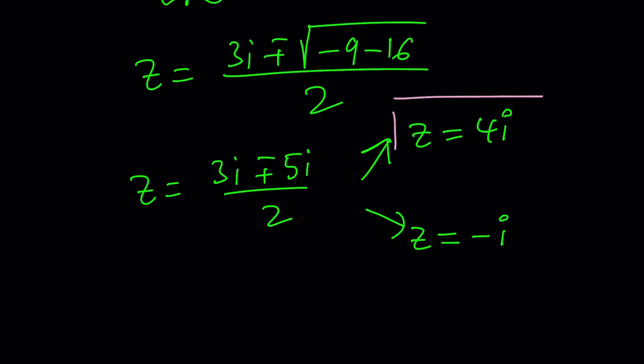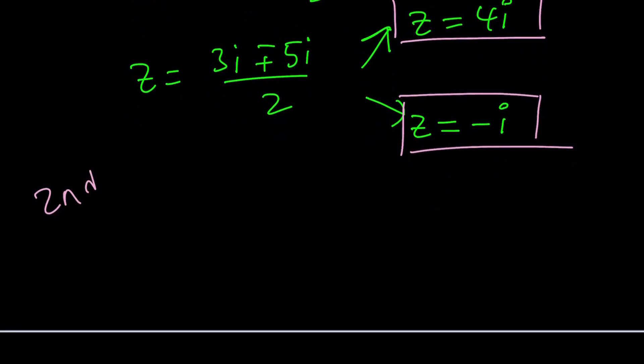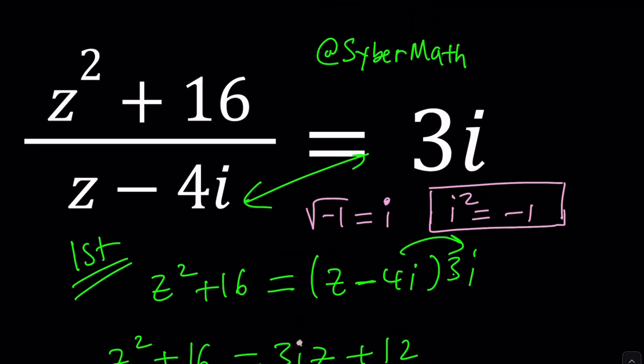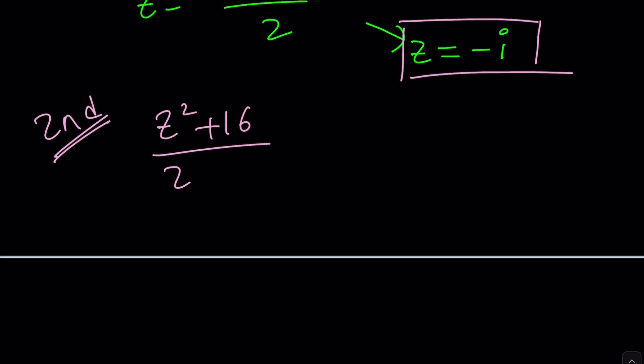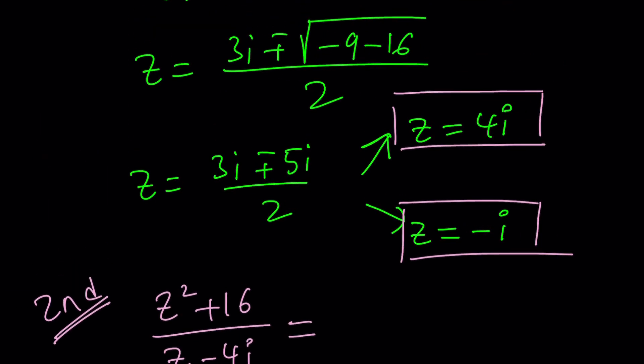Because we still have to do the second method, right? Wait a minute. Weren't you waiting for the second method? I think so, right? Because that's going to be much more elegant, right? I promise that. So let's go ahead and take a look. We have z squared plus 16 divided by z minus 4i equals 3i, right? That was the right-hand side, I think. Let me double check, okay, in case I mess it up.